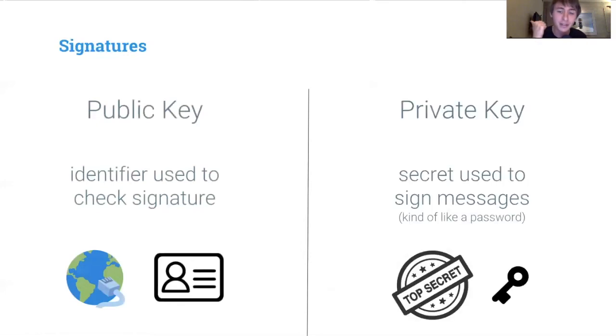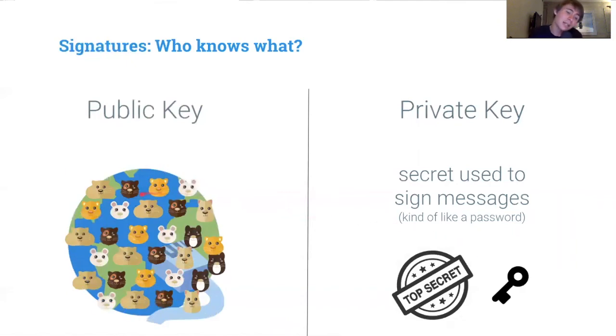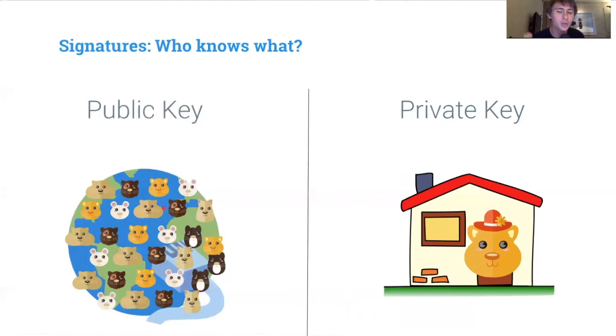There are two pieces: the public key and the private key. The public key is your identifier, which is used to check the signature. That is public on the internet - everyone knows your identifier. Your private key, only you know it. It's kind of like a password. If someone steals your private key, then they can impersonate you, and you don't want that to happen. Everyone knows your public key, and only you know your private key. You keep it in your safe.